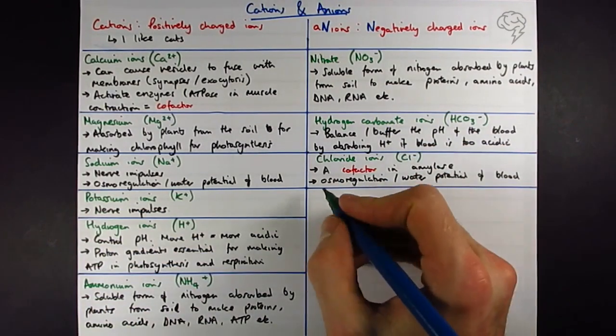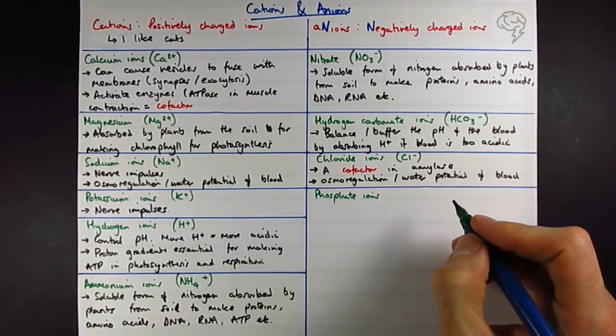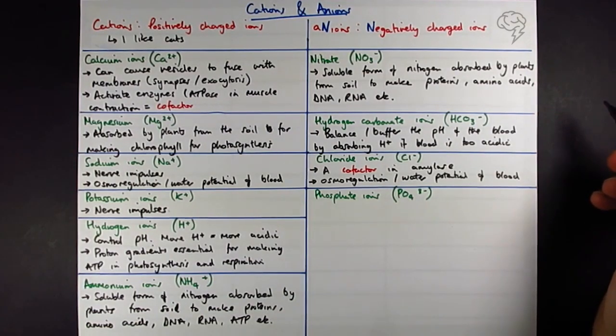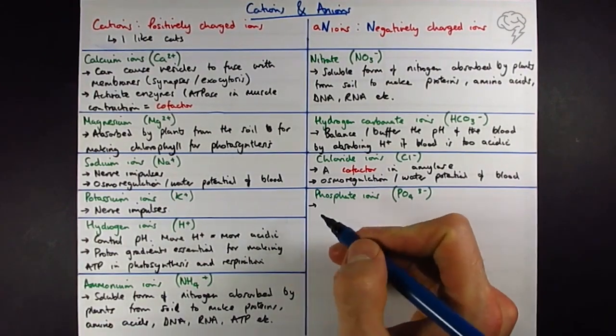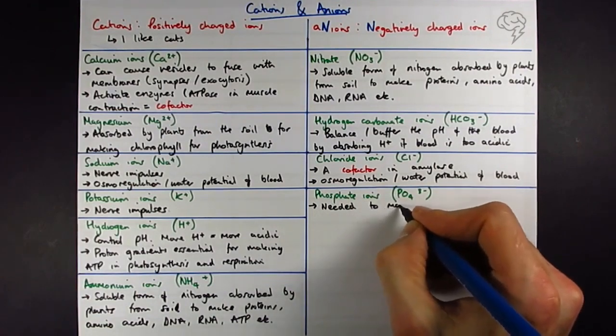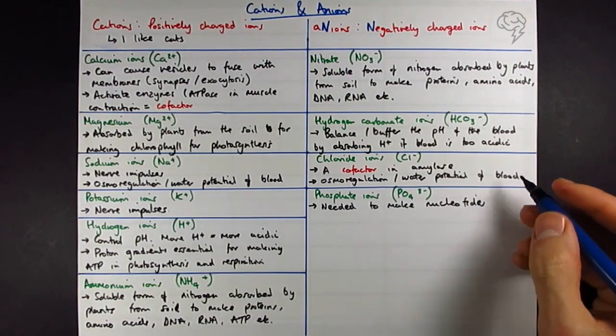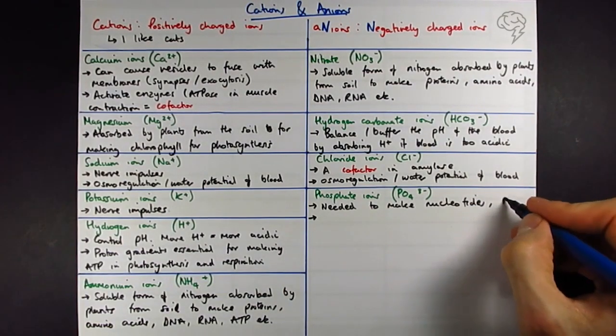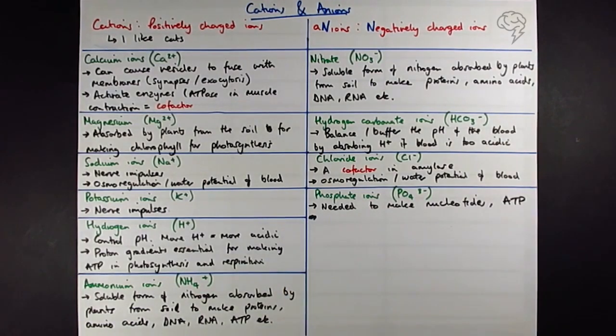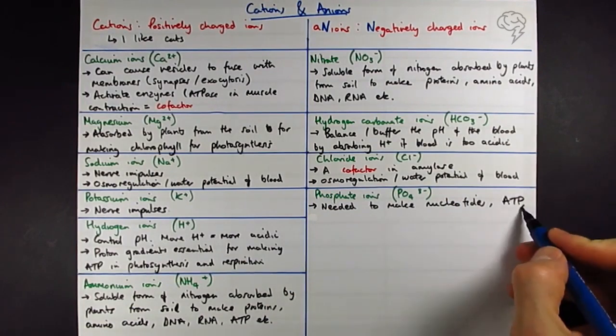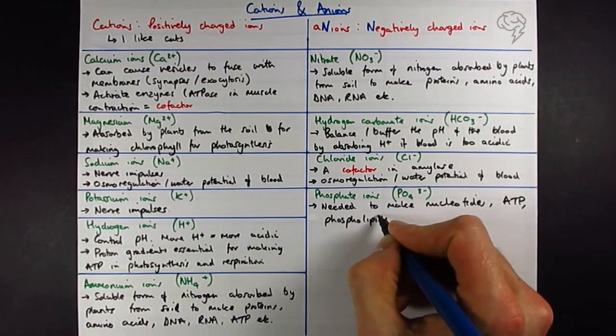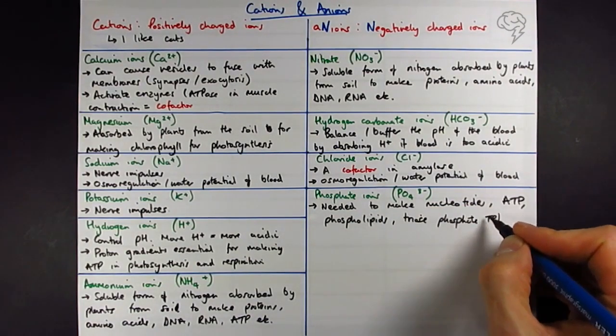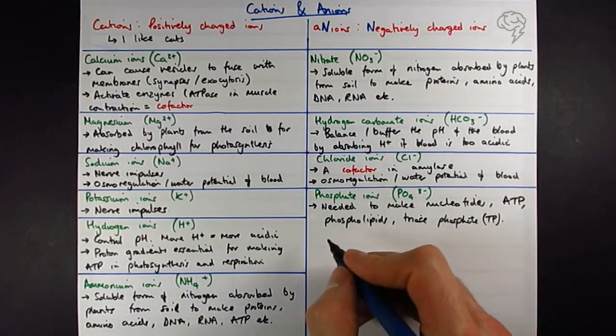Only a couple more. So phosphate ions. These are PO4 3-. Well, it's needed to make nucleotides. So RNA and DNA. We also need it to make ATP. So nucleotides are like the monomers basically that build up RNA and DNA. In fact, let's just carry this on as a list. It's nucleotides. It's required to make ATP. It's required to make phospholipids. We also need to make triose phosphate, TP. This basically means it's required for respiration and photosynthesis.